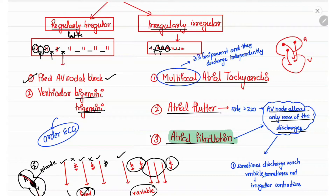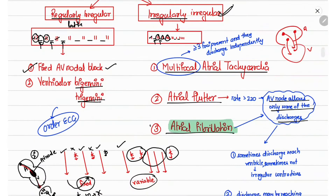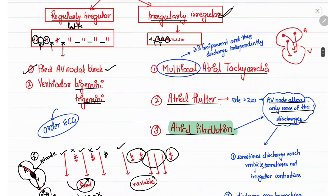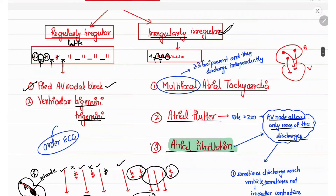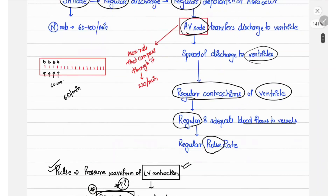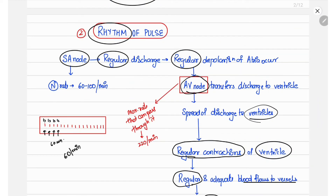Irregularly irregular pulse can occur in cases of multifocal atrial tachycardia (MAT), atrial flutter, atrial fibrillation, variable AV block, and premature ventricular contractions (PVC). In multifocal atrial tachycardia, three or more foci within the atria produce impulses simultaneously, so there is not enough diastolic filling time and missed beats result. In atrial flutter and atrial fibrillation, missed beats occur due to both mechanisms. An important concept is that the AV node can pass a maximum of 220 impulses per minute.